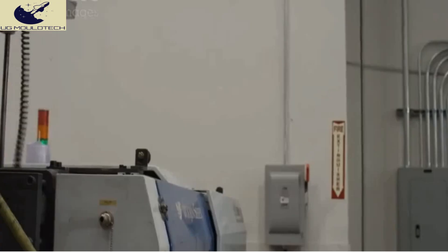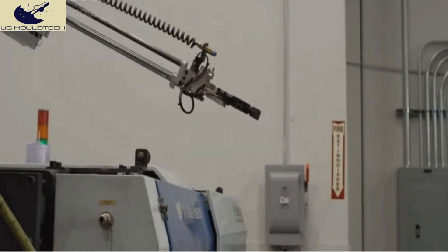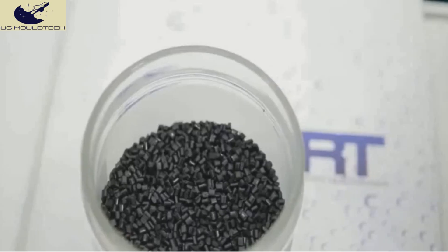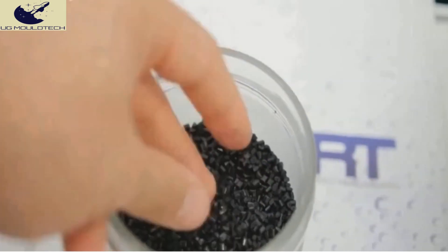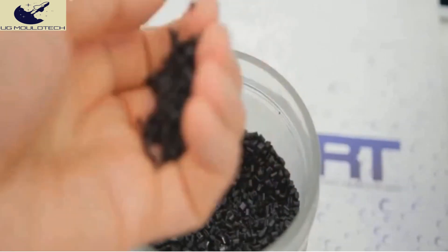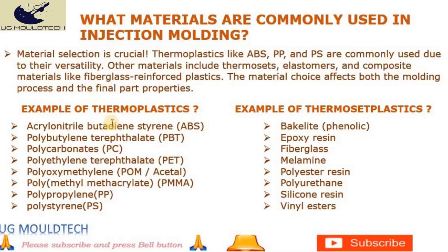Question 4: What materials are commonly used in injection molding? Material selection is crucial. Thermoplastics like ABS, PP, and PS are commonly used due to their versatility. Other materials include thermosets, elastomers, and composite materials like fiberglass reinforced plastics. The material choice affects both the molding process and the final part properties.